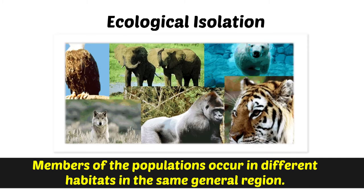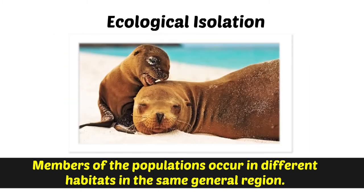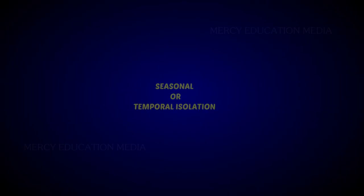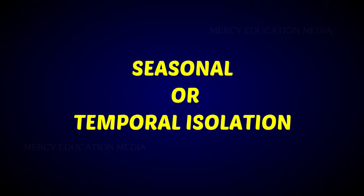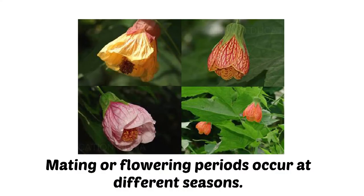Members of the population occur in different habitats in the same general region. What are seasonal or temporal isolations? Mating or flowering periods occur at different seasons.